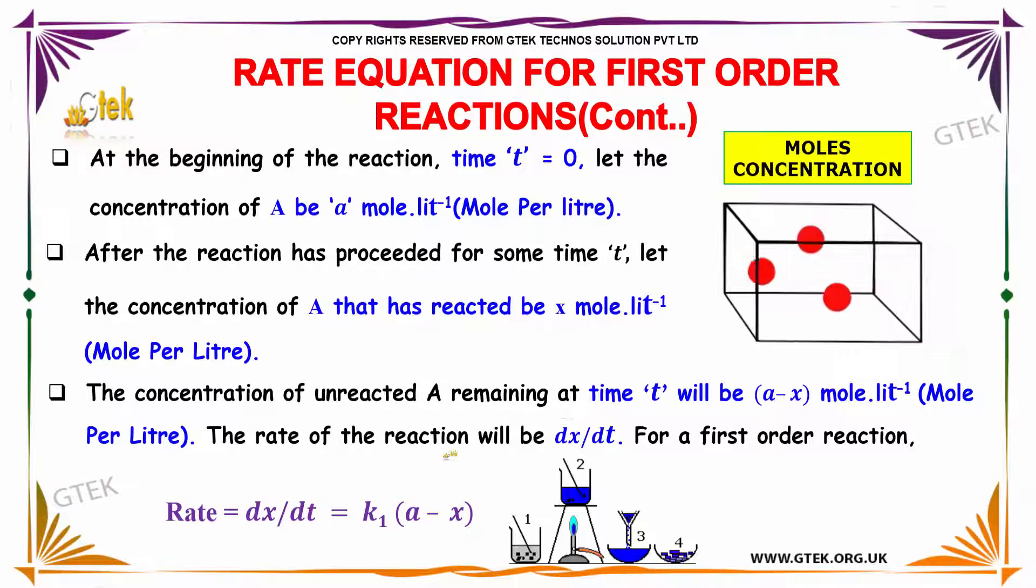The rate of the reaction will be dx/dt for a first-order reaction. The rate is given by dx/dt = K1(a-x).